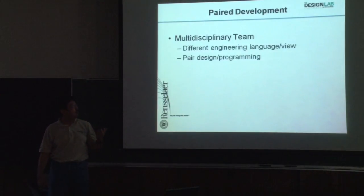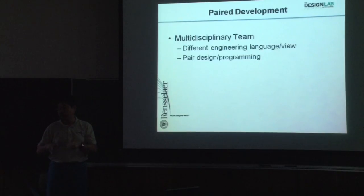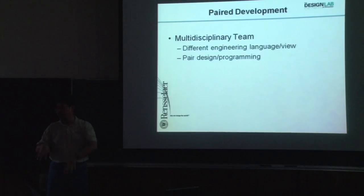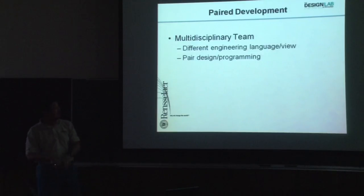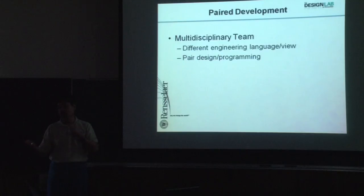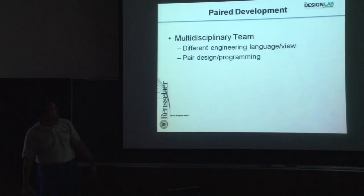Probably you are familiar with pair programming — like, two people work together. You can bounce your ideas. Also, one person writes the code and the other is better able to do code review as you go. Similarly, if we put only one electrical engineer into a very dominating mechanical engineer team, it doesn't work because that student cannot bounce ideas as well. So we found that pair development works.